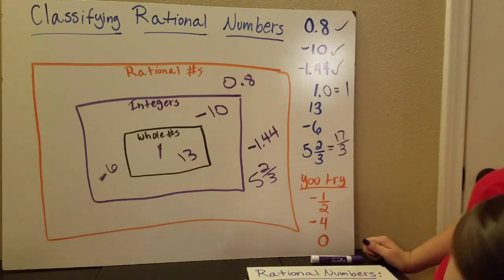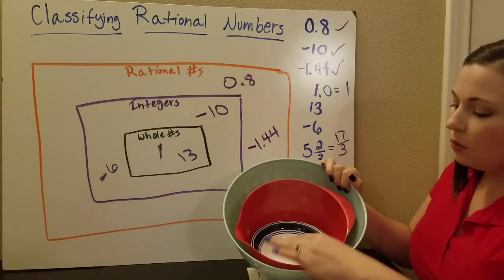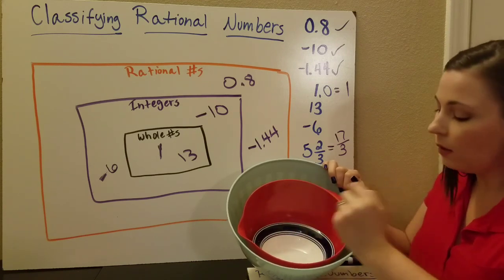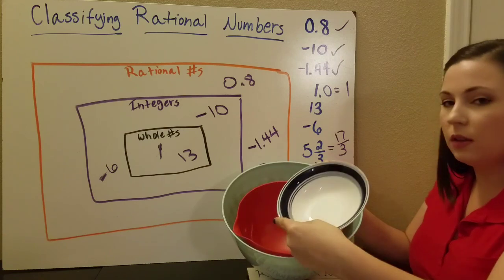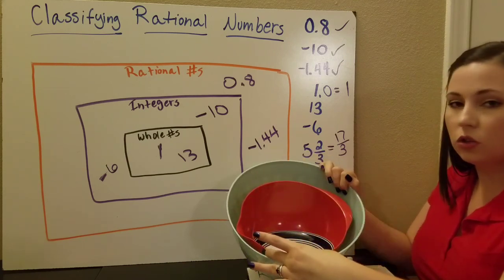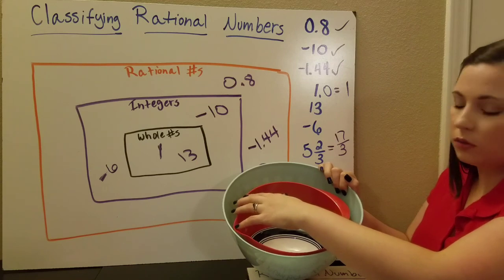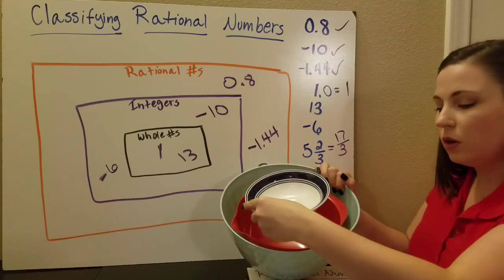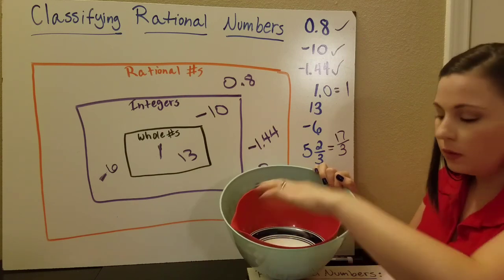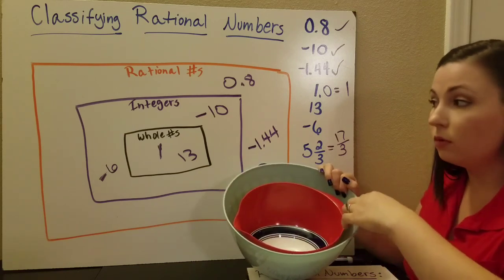If you're still a little confused, think about bowls. I've got three bowls: a large bowl, a medium bowl, and a small bowl. Putting numbers in their different groups is like putting different items in the bowls. If an item fits in the smallest bowl, it's also going to fit into the medium bowl and the largest bowl — that's like the whole numbers. Something that doesn't fit in the small bowl but fits in the medium bowl will also fit in the large bowl — that's your integers. And some things won't fit into either the whole numbers or the integers; the only group for them is the large bowl, the rational numbers.